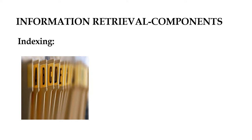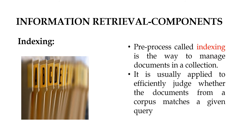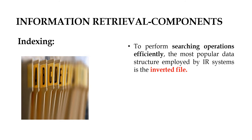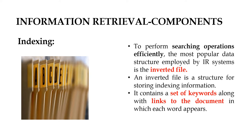The first process is indexing. Indexing is nothing but arrangement of data in a particular order such that the data can be easily searched and retrieved. It is a pre-process that manages documents in a collection. We will be representing huge data in a term called corpus. Once a query is given by the user, indexing should be done such that the corpus and the given query can be matched. This indexing can be implemented using an inverted file, which is a data structure for storing indexed information containing a set of keywords along with links to the documents in which each word appears.